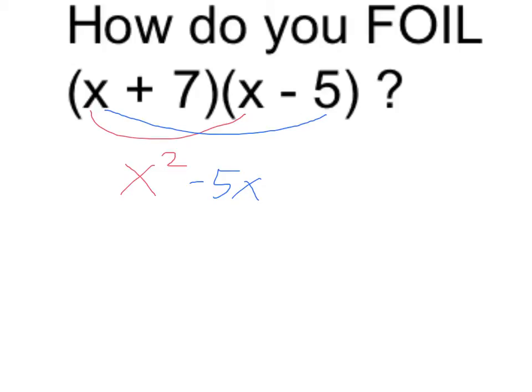The inner is going to be 7 times x, or plus 7x. Last term of each of the binomials is 7, and again we take the minus with the 5, so that gives us negative 35.